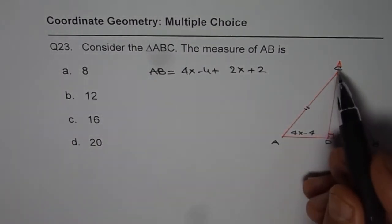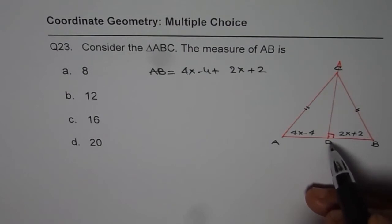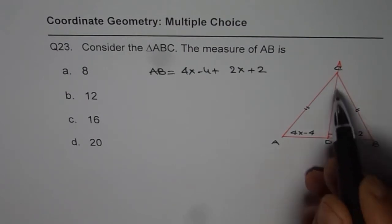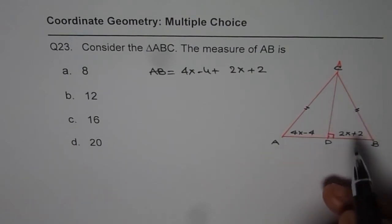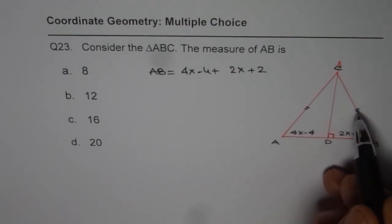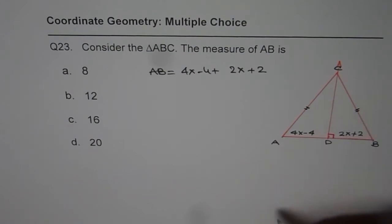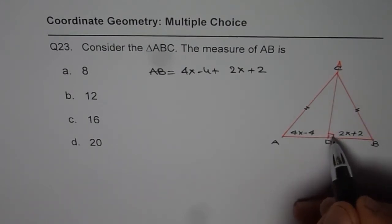We are also given that point C is on the right bisector of AB. Since in this triangle, it is an isosceles triangle. These two sides are equal, right? When these two sides are equal, and that is perpendicular,